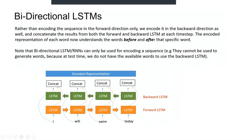However, in a backward LSTM, it starts from 'today' and moves from right to left. So at time T0 it passes 'today', at time T1 it passes 'swim', at time T2 it passes 'will', and at time T3 it passes 'I'.